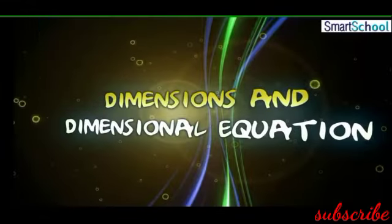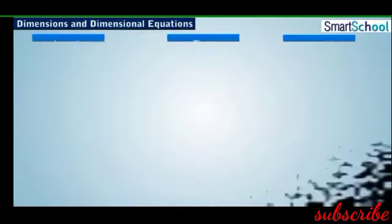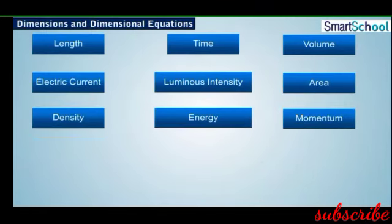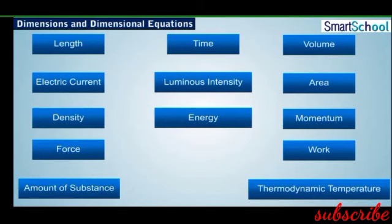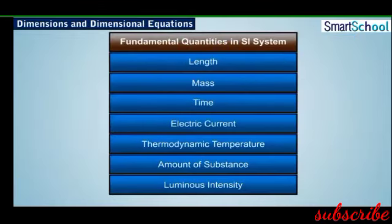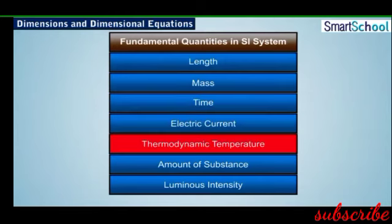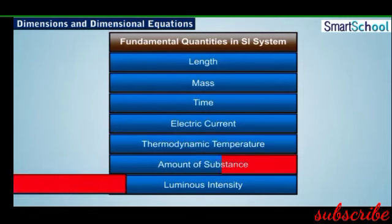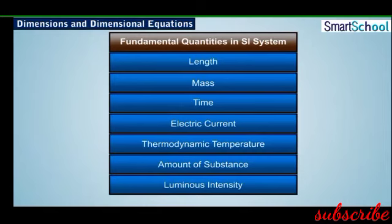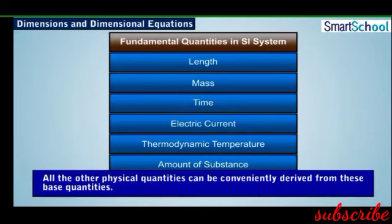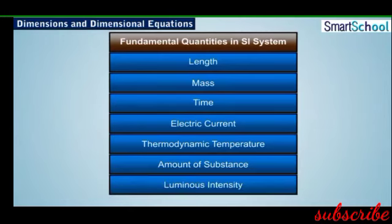In this module, we will be learning about dimensions and dimensional equations. We learned earlier about different physical quantities, of which 7 are considered fundamental according to the SI system of measurements, while the others are derived physical quantities. These 7 fundamental quantities are also referred to as base quantities, and all other physical quantities can be conveniently derived from these base quantities.